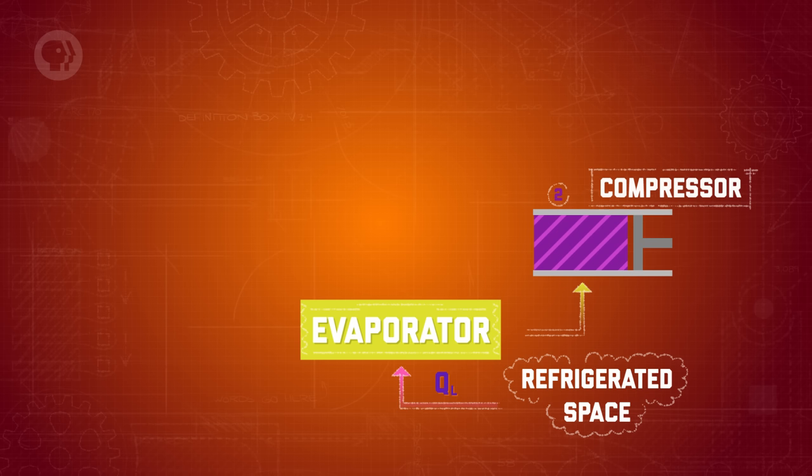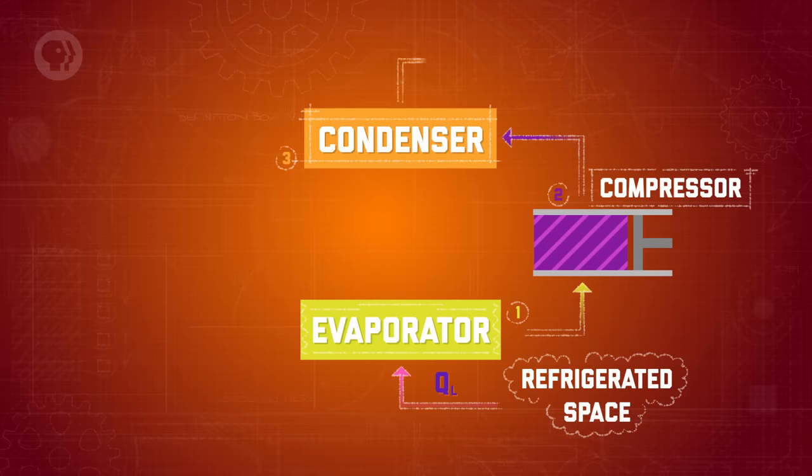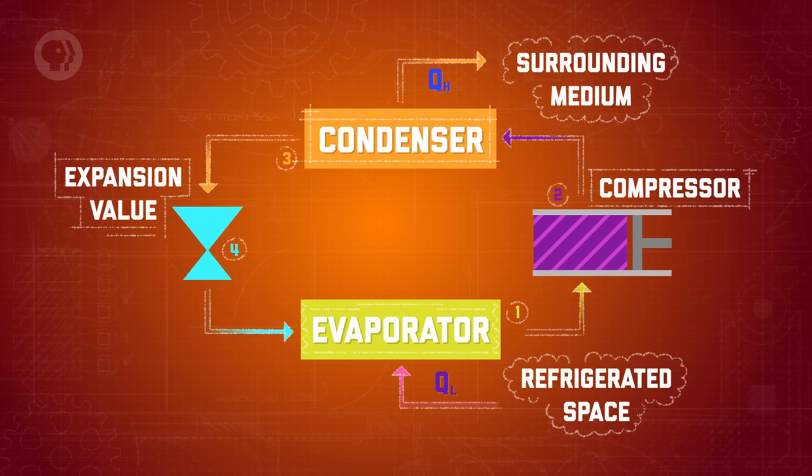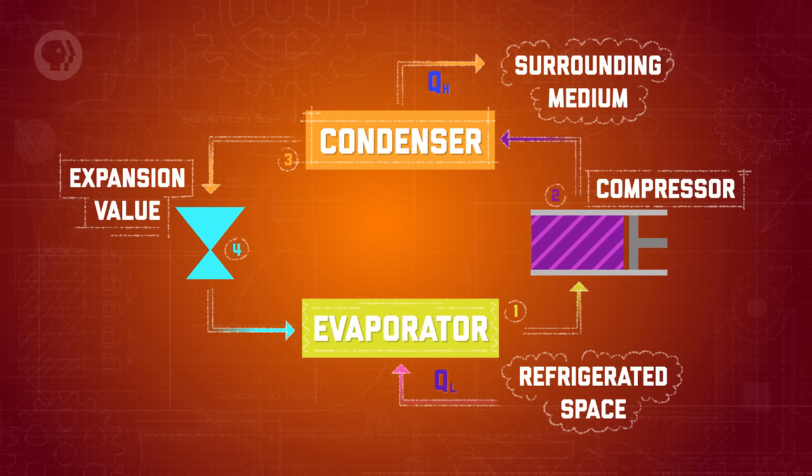Stage two is the compressor. Its job is to raise the pressure of the gas, which also raises its temperature and its boiling point. After stage two is complete, the gas is really hot — hotter than the air outside the fridge. But because its boiling point increased too, it's still around the temperature where it's ready to condense into a liquid. Which brings us to stage three, the condenser, which is basically the opposite of the evaporator. In the condenser, the gas turns into a liquid, a process that releases heat. Since the refrigerant is now hotter than the air outside, heat can flow from inside the condenser to the surrounding air. But like in the evaporator, the temperature of the refrigerant stays constant in the condenser. Finally, in stage four, an expansion valve throttles the liquid, lowering its pressure and therefore lowering both its temperature and boiling point — the opposite of what happens in the compressor. You end up with cold liquid refrigerant at a lower pressure, ready to enter the evaporator and start the process all over again.